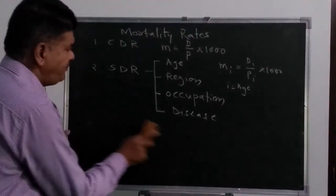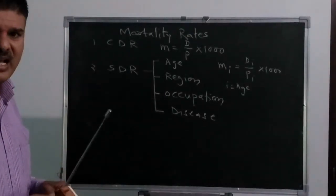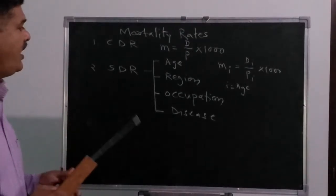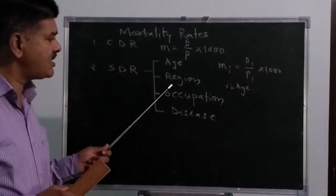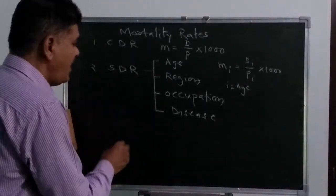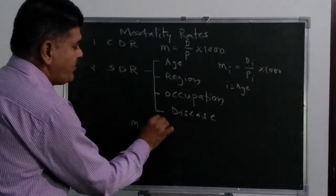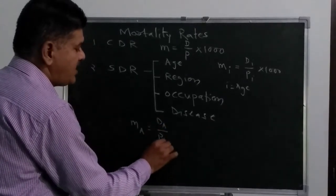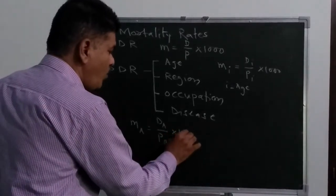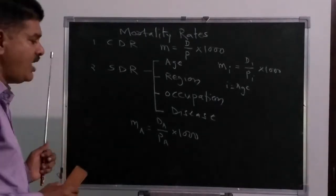The second specific death rate is according to region — regional specific death rates. Suppose I am interested in deaths in Kolapo district. The death rate in Kolapo district is the total number of deaths in Kolapo district divided by the total population of the district, multiplied by 1000. We can also combine this with age-specific death rate.